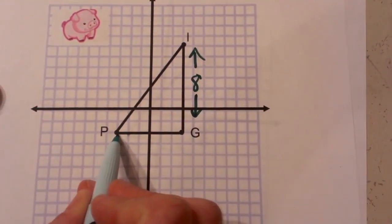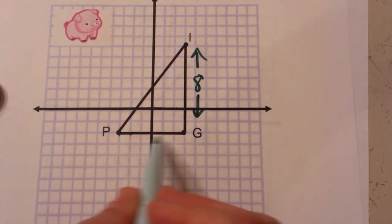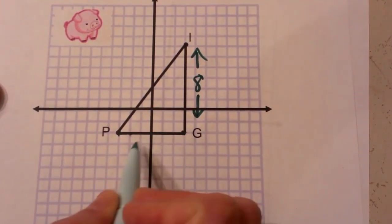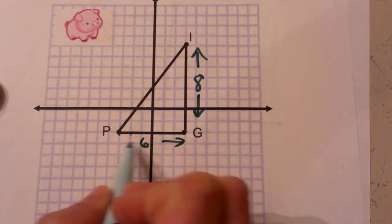Then I'm going to find the distance from P to G. Again, this is a vertical or horizontal line so it's nice and easy: 1, 2, 3, 4, 5, 6, so this side is 6.